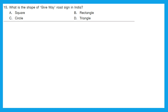Question 15: What is the shape of the give-way road sign in India? It is a red-colored triangular sign, making it one of the cautionary road signs. The right answer is D — triangle. A give-way or yield sign indicates that merging drivers must prepare to stop if necessary to let a driver on another approach proceed. Give-way signs are placed at intersections where other vehicles have priority.